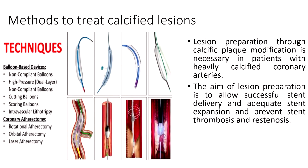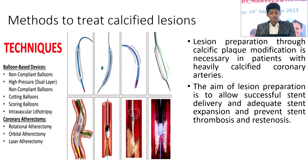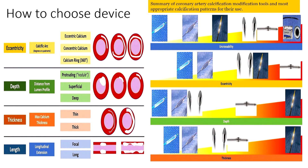What are the methods to treat calcified lesions? There are balloon-based devices and atherectomy. Balloon-based devices create cracks and cuts to allow stent expansion, while atherectomy devices debulk coronary lesions and help in stent expansion. The important parameters to assess in calcium are eccentricity, depth, thickness, and length — based on which we choose atherectomy devices for debulking or balloon-based devices followed by stenting.